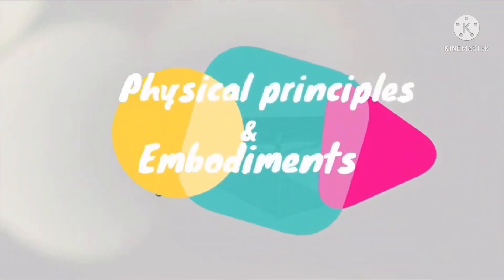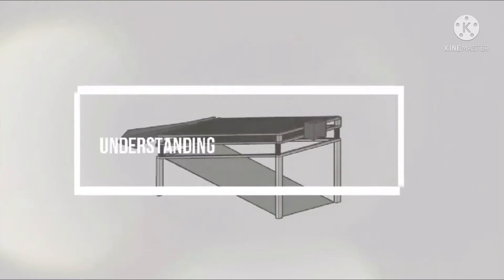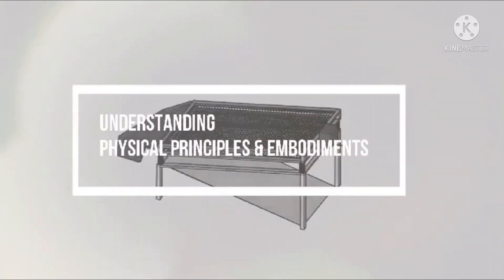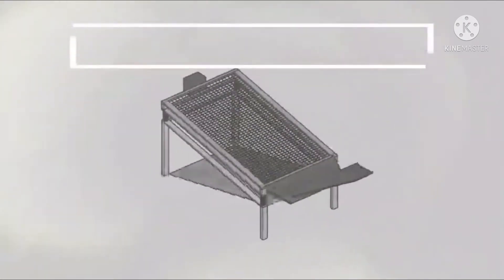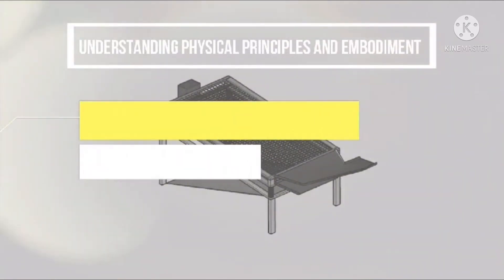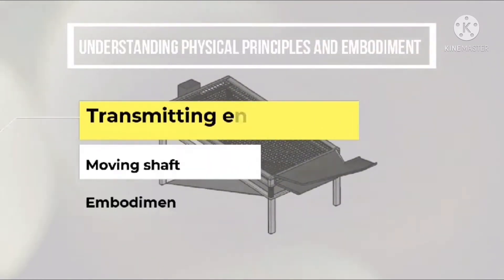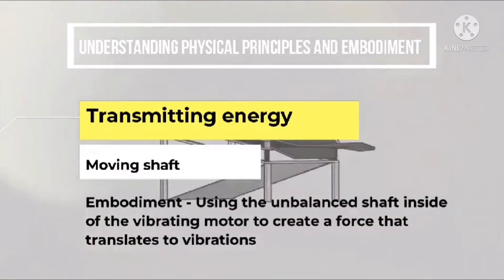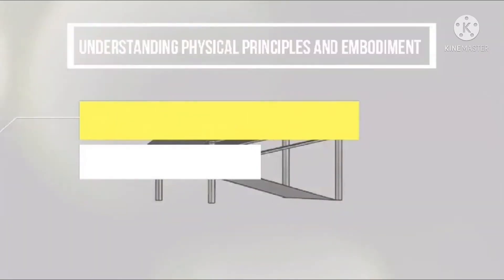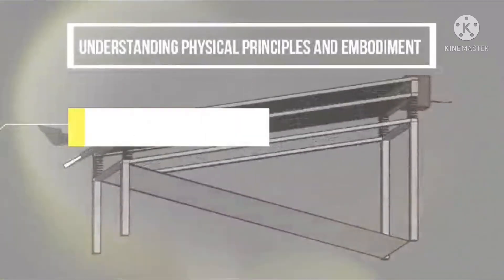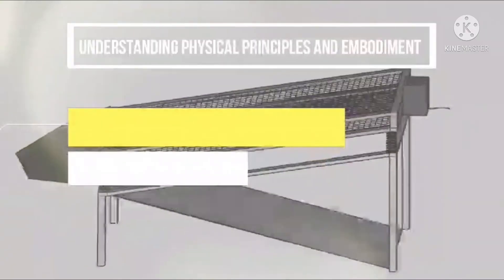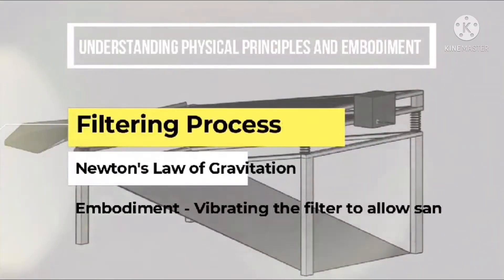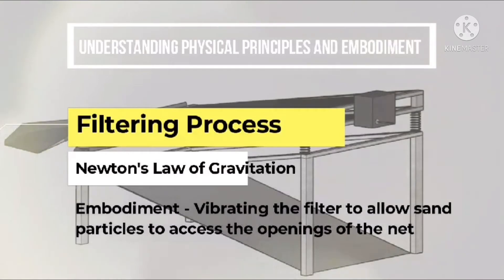Now let's talk about the physical principles and embodiments. To transmit energy, a shaft is used — specifically an unbalanced shaft — in order to create a force that translates to vibrations. The filter is vibrated to allow sand particles to access the openings of the net, and they fall down due to gravity.